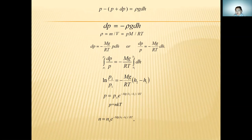This is the derivation. P is pressure. The equation is p = (p + dp) - ρgh. We have dp = -ρg dh. We have the formula where ρ is density.